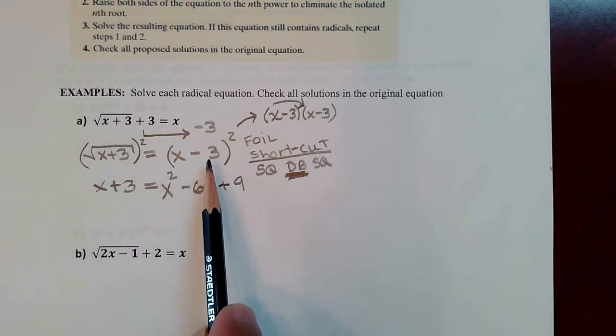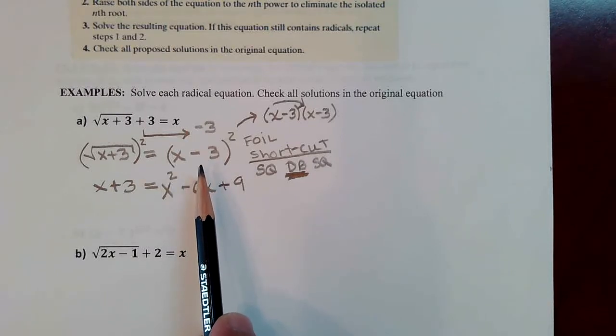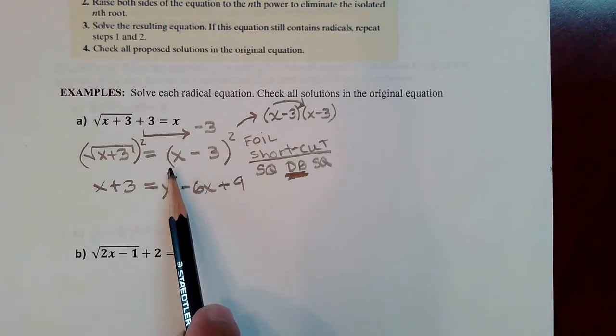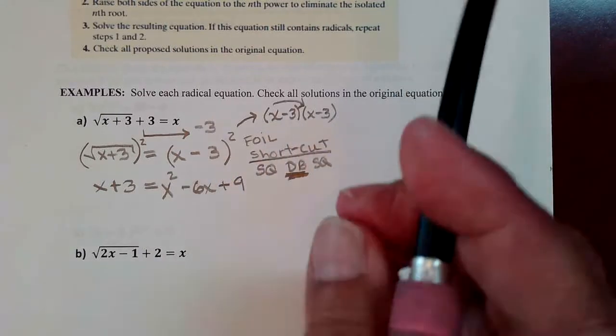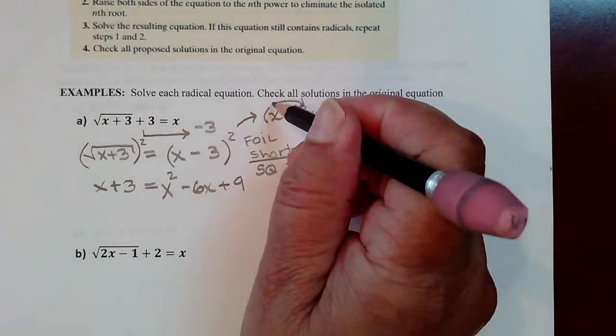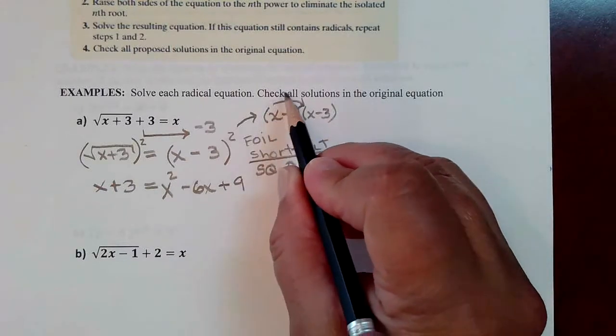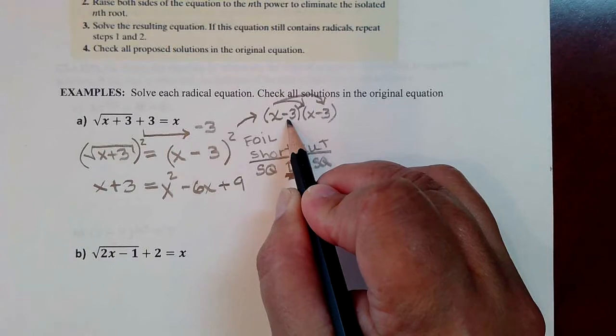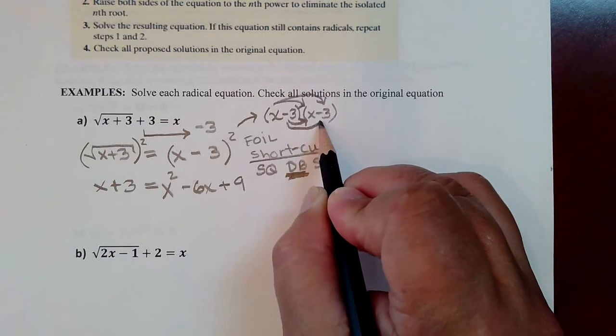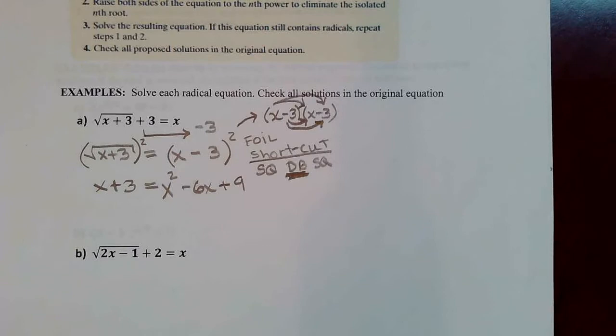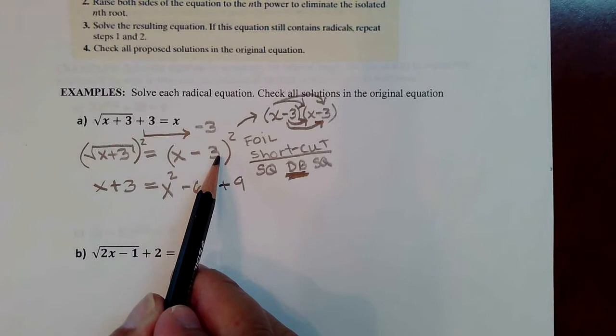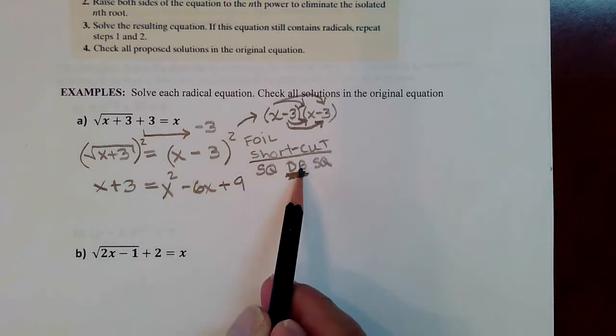But on this side, which challenges students, maybe they're not as good as they need to be with foiling. This means foiling and some students don't even recognize that, that this means x minus 3 times x minus 3. And if you were going to foil that the long way, you'd have to go x times x, x times negative 3. It's a four-step process. You'd have to go inner times inner and last times last. That's if you're doing it the long way.